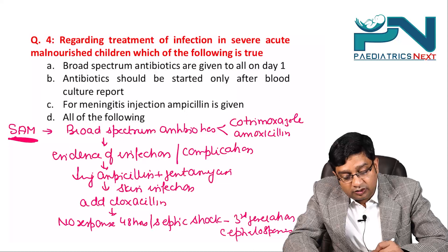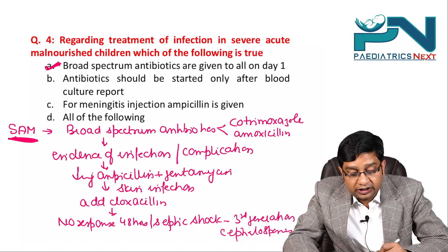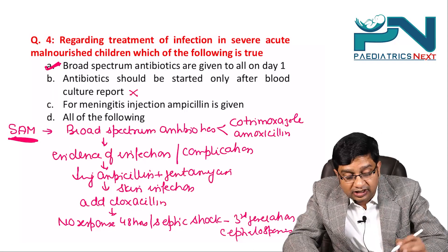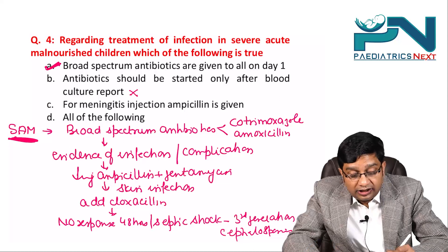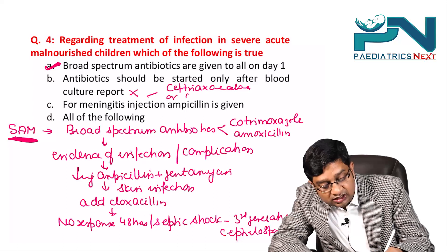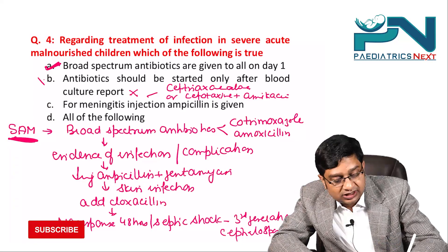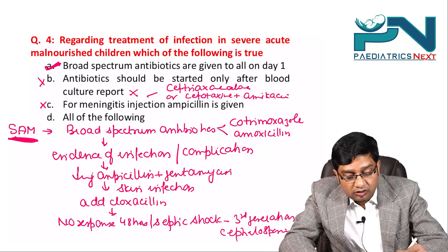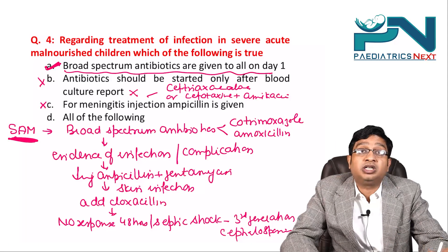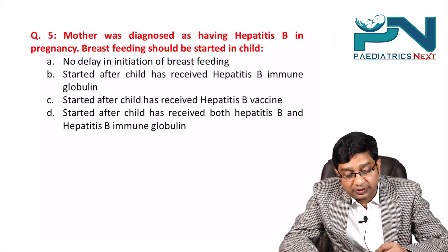So the correct statement is that broad-spectrum antibiotics are given to all SAM children on day one. The option that antibiotics should be started only after blood culture report is not true. For meningitis, you give ceftriaxone alone or cefotaxime plus amikacin. Therefore, only the first choice is true.